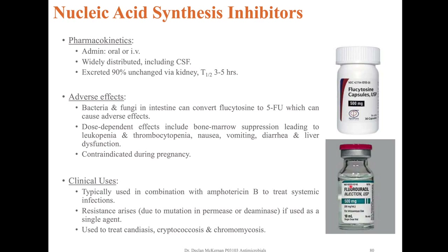In terms of adverse effects, bacteria and fungi in the intestine are able to convert flucytosine to 5-fluorouracil, or 5-FU, which can cause local adverse effects. While it doesn't enter human cells, gut microbiota and resident fungal cells can convert some flucytosine to 5-FU, a well-known cancer chemotherapy drug that is quite toxic. There are reports of dose-dependent side effects including bone marrow suppression leading to leukopenia or thrombocytopenia, nausea, vomiting, diarrhoea, and in some cases liver dysfunction.